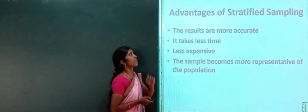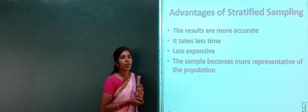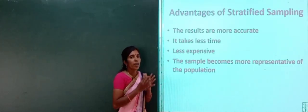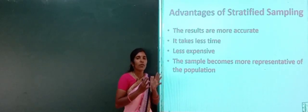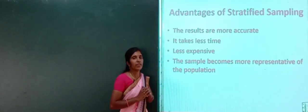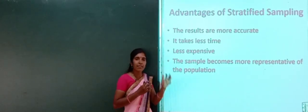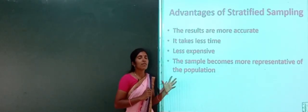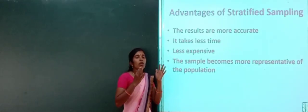Stratified sampling has some advantages. First, the results are more accurate, because we are grouping units in accordance with their features, making the result accurate. Second, it takes less time compared to simple random sampling. Third, it is less expensive, as we do not consider all sampling units individually. Fourth, the sample becomes more representative of the population because we are making groupings of the units.